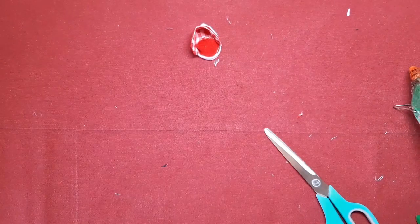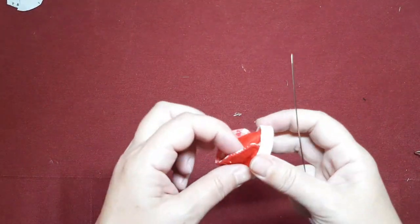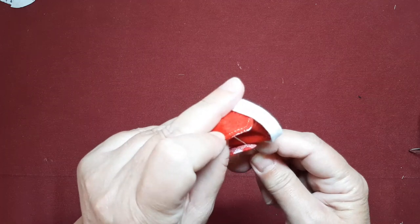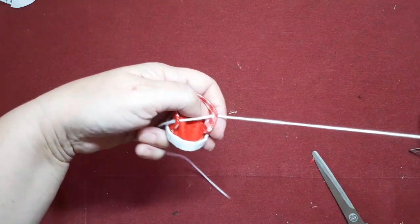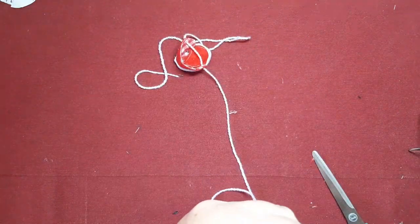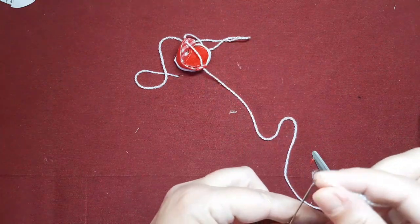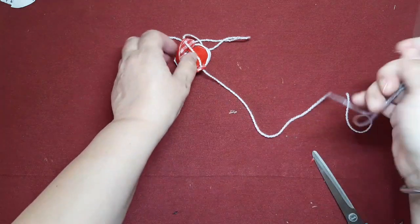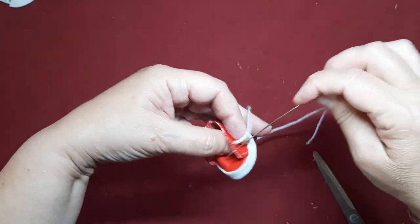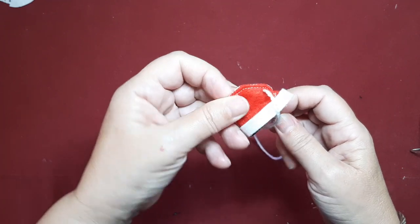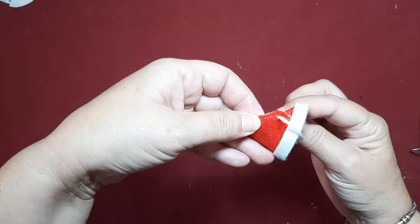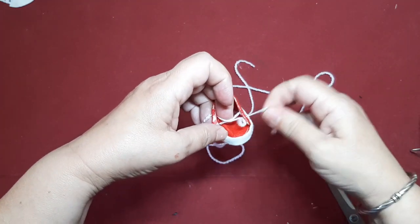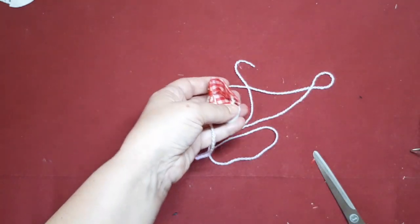Ahora vamos a cogernos un trocito de lana. Bueno, pues nos vamos a coger desde la parte de aquí abajo. Nos vamos a venir a la parte de aquí arriba. Y vamos a dejar esta hebra suelta. Y ahora vamos a coger la otra parte. Y vamos a venirnos por la parte de abajo. Y vamos a ir hacia la de arriba. Y ya podremos calzarlo.